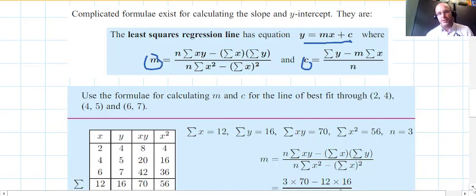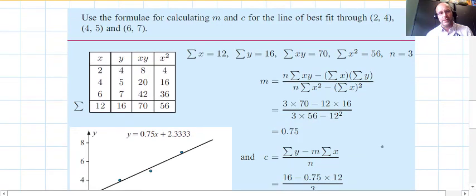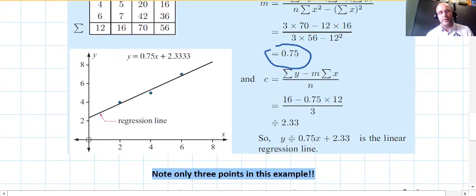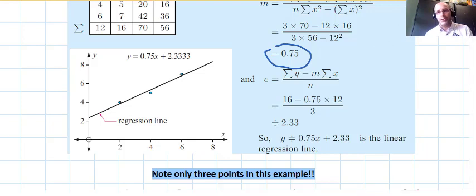An example here just uses three points, and just with three points you can see the amount of work you've got to do here to find the gradient and the y-intercept. So three points and it's a lot of work, so imagine if you had 30 or 40 points, which is often what we might have. That will do the job, but we're going to use technology to perform exactly the same feat and have the same output.